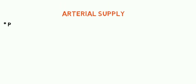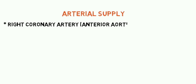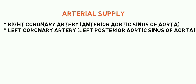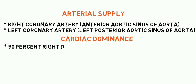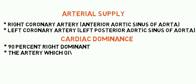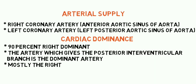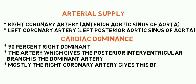Now let's see about the blood supply of the heart, starting with arterial supply. The first artery supplying the heart is the right coronary artery, derived from the anterior aortic sinus of the aorta. The second is the left coronary artery, derived from the left posterior aortic sinus of the aorta. There is also the concept of cardiac dominance. In about 90 percent of cases it is right-side dominant, meaning the right coronary artery gives the posterior interventricular branch, and the artery that gives this branch is called the dominant artery.